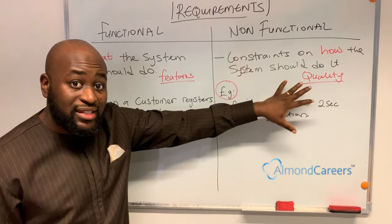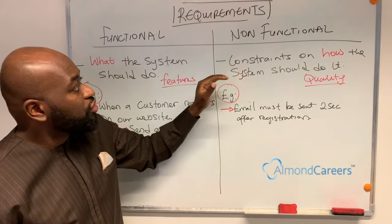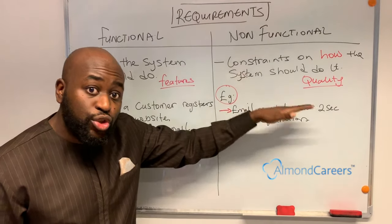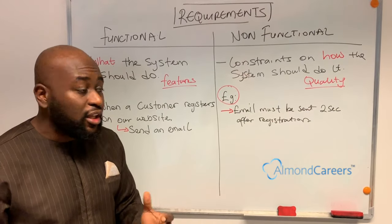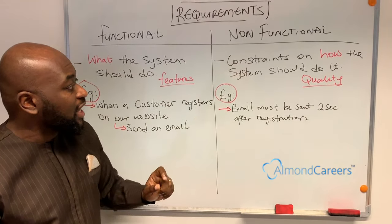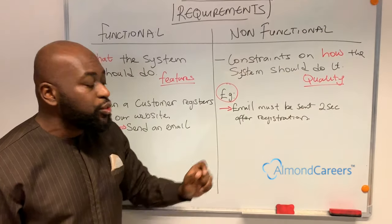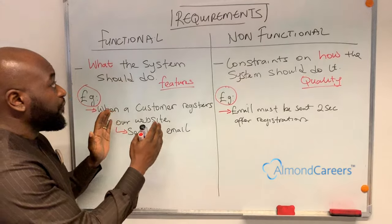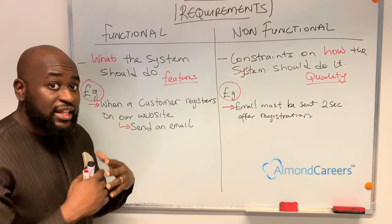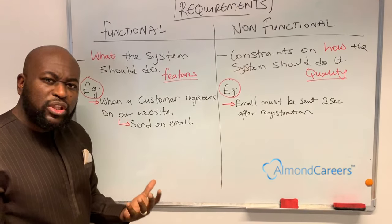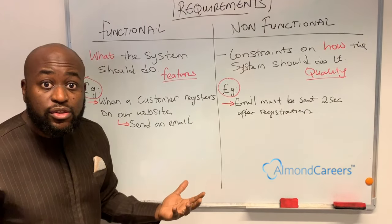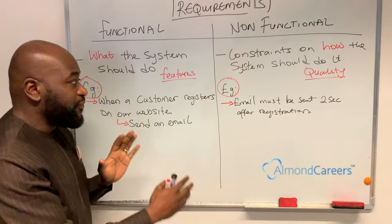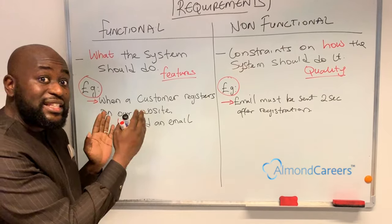The non-functional side looks at the constraints on how the system should do it. You said send an email, but the non-functional requirement would say that email must be sent two seconds after registration. The system can fulfill the functional requirement by sending an email, but what if it takes three hours, two days, or one week for the email to actually arrive? Have you met the functional requirement? Yes.